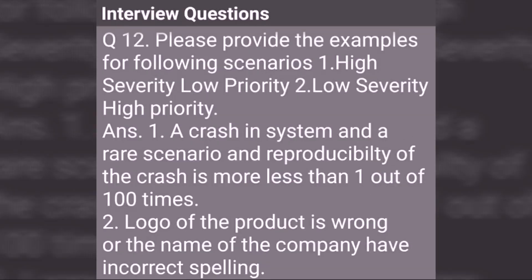Please provide examples for the following scenarios: 1. High severity and low priority — A crash in the system that occurs in a rare scenario with reproducibility of 1 out of 100 times. 2. Low severity and high priority — The logo of the product is wrong, or the name of the company has an incorrect spelling. This scenario comes under low severity and high priority.